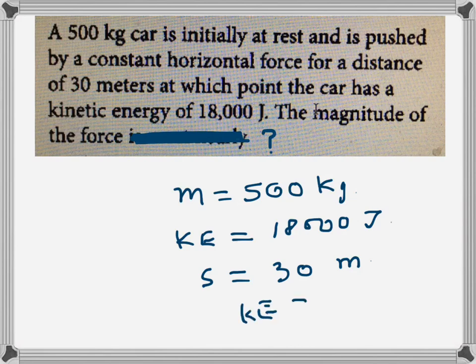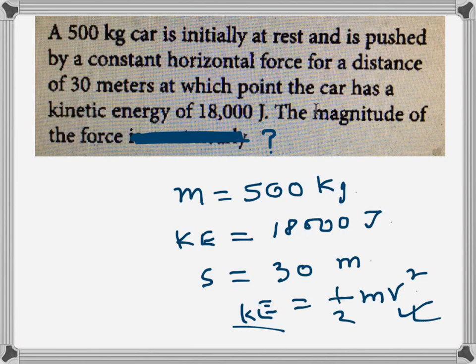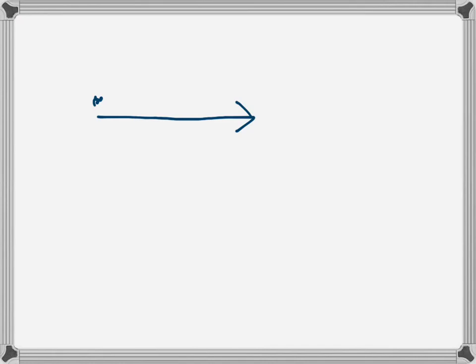The formula for kinetic energy is ½mv². We know mass and we know kinetic energy, so we can find v². But before solving that, let me also write down what other formulas we can use. We need to find F finally. From Newton's second law, F = ma.